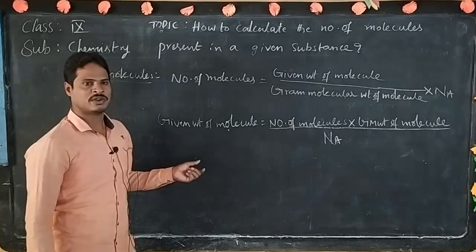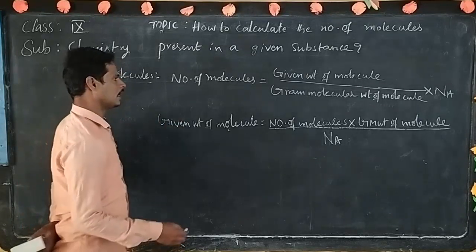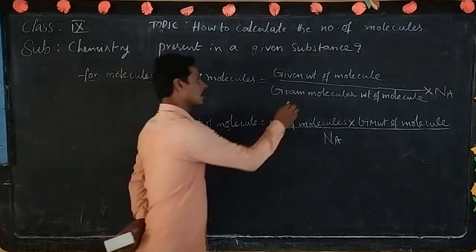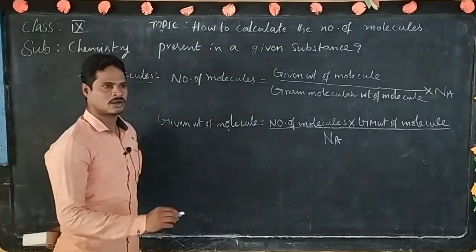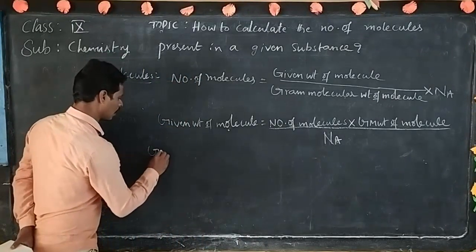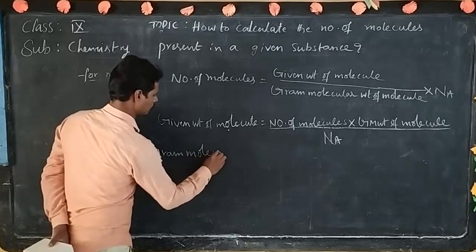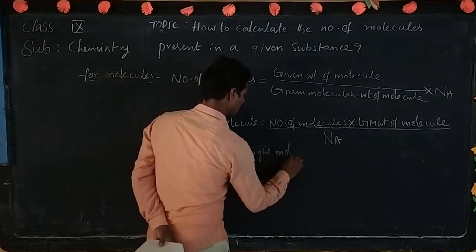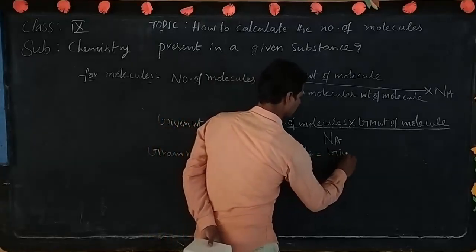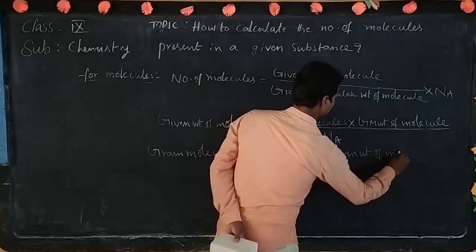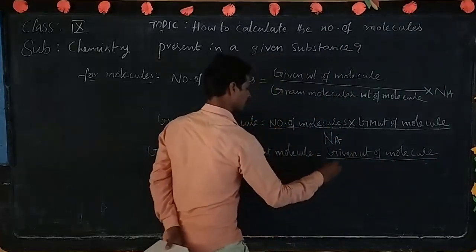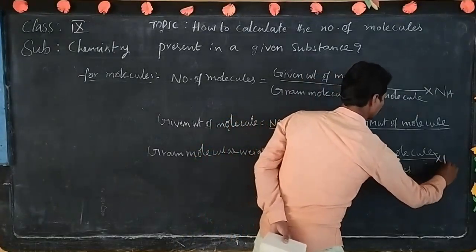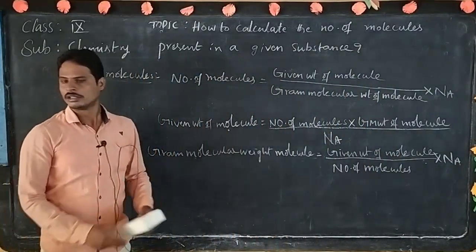How you can modify the first formula? Third formula: if we know number of molecules as well as given weight of molecule, and we have to calculate gram molecular weight of molecule, the formula changes: gram molecular weight of molecule equal to given weight of molecule by number of molecules into Avogadro number. So, these are the three formulas.